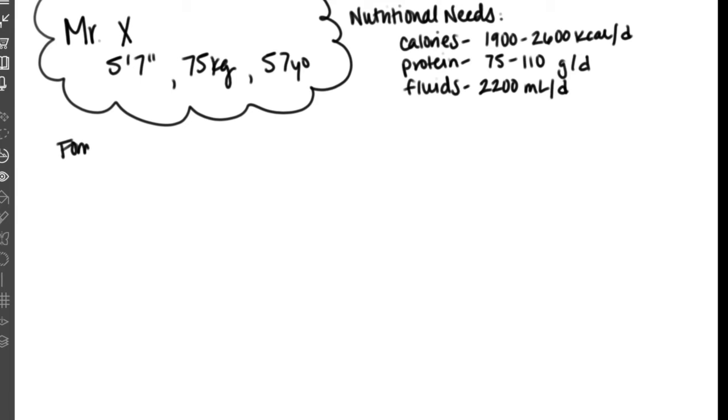This formula we're choosing is a 1.5 calorie per milliliter formula. This formula also contains about 64 grams per liter of protein and is 76% free water. It should also be noted that you need about a thousand milliliters of this formula to meet the DRIs for all vitamins and minerals.